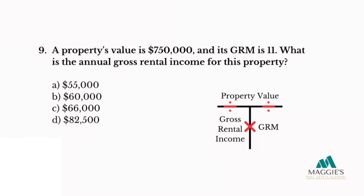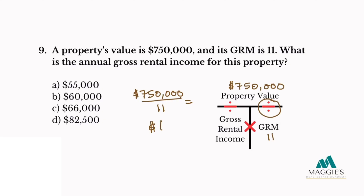Question nine: A property's value is $750,000 and its GRM is 11. What is the annual gross rental income for this property? A. $55,000, B. $60,000, C. $66,000, or D. $82,500. With property value of $750,000 on top and a GRM of 11 in the right column, according to the t-chart I divide: $750,000 divided by 11 equals $68,181. The closest answer is C — $66,000.